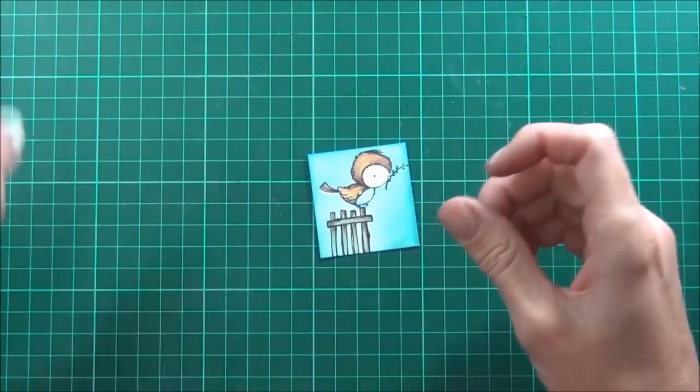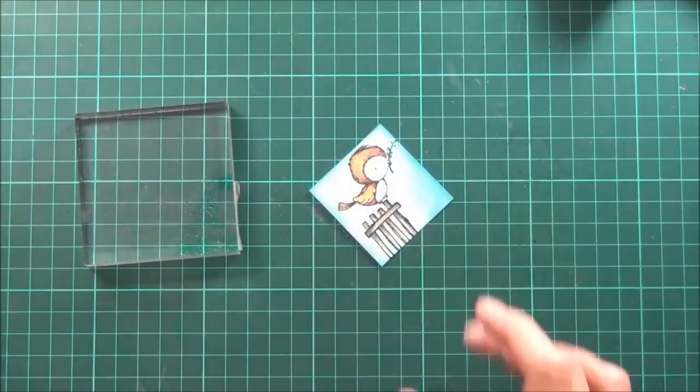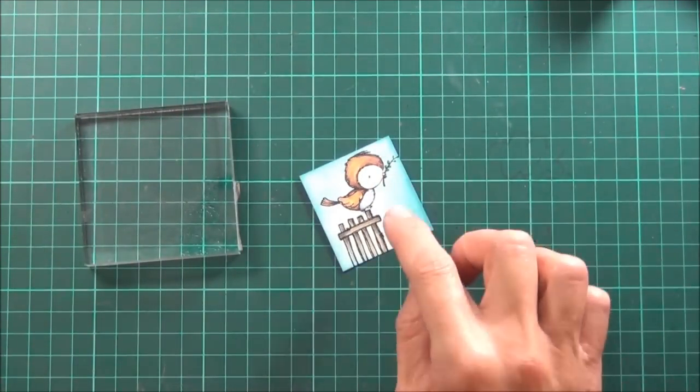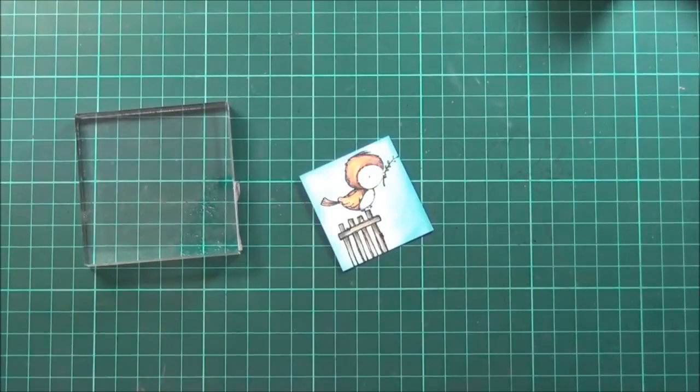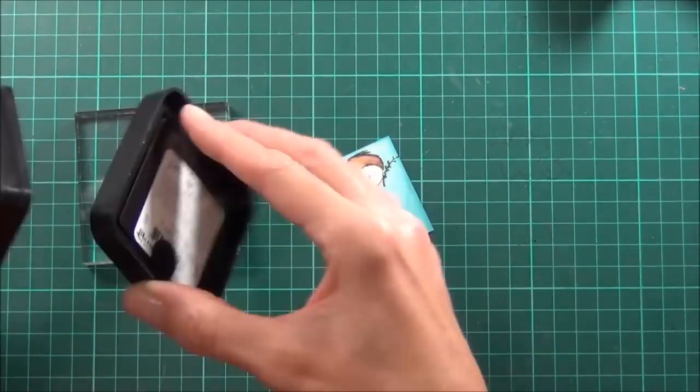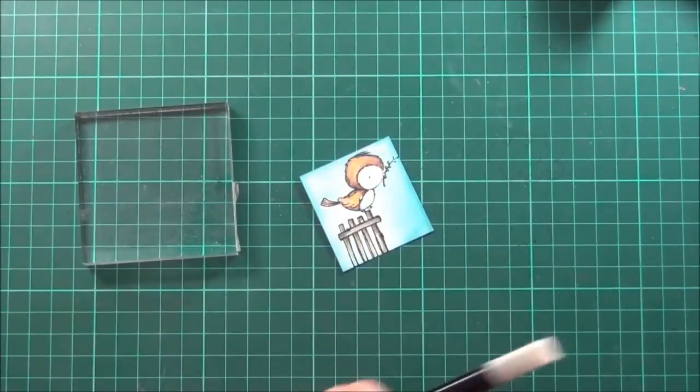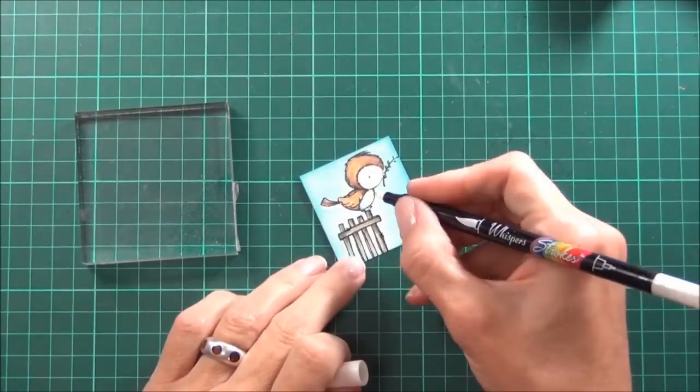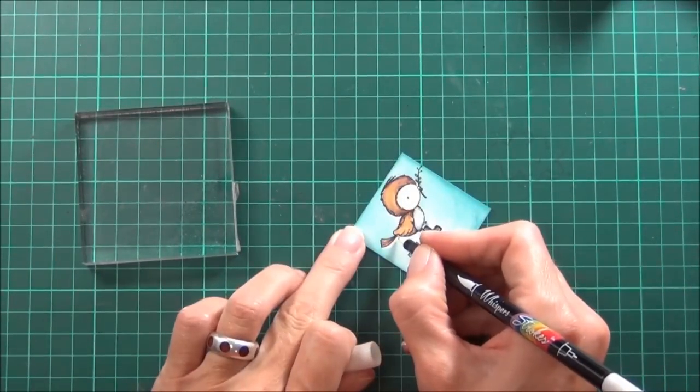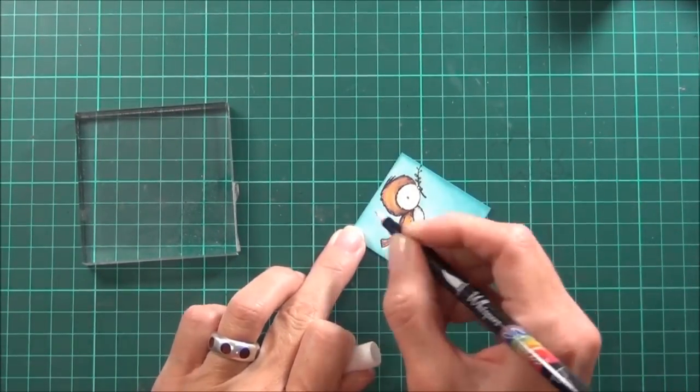If you look closely, you can see that I've missed a little bit of an edge around my image. So I'll just take some of the Tumbled Glass distress ink and put it on a block, and I've got a blender pen here. Let's pick up some of that ink and just run that around the edge.